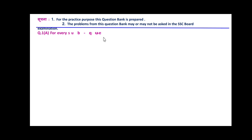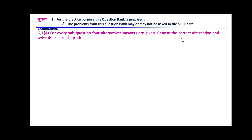Question number 1A — for every sub-question, four alternative answers are given. Choose the correct alternative and write the alphabet of it. In the board answers, you have to write only the alphabet of the option rather than writing the whole option. This will take very few minutes to complete question number 1A, which is annotated for four marks in the board examination.